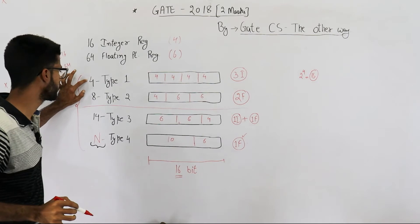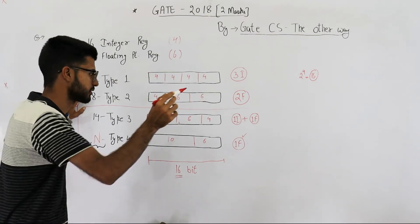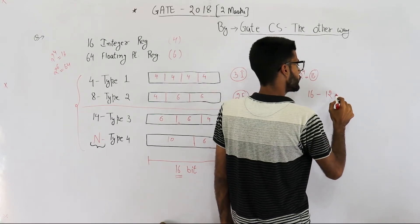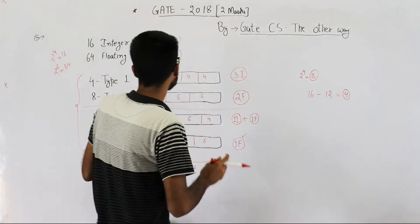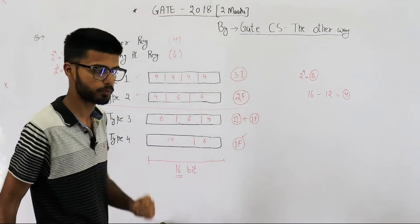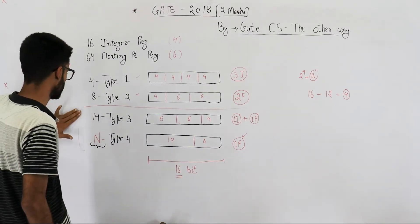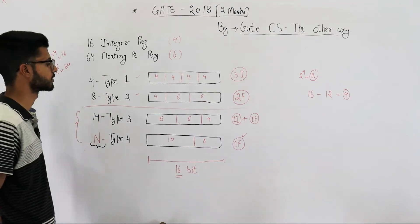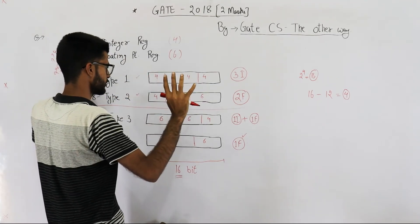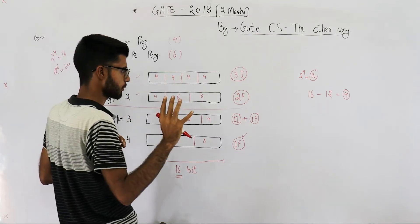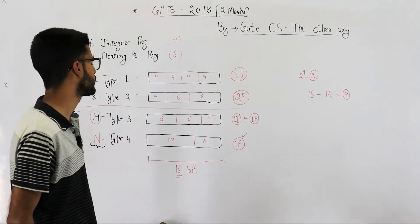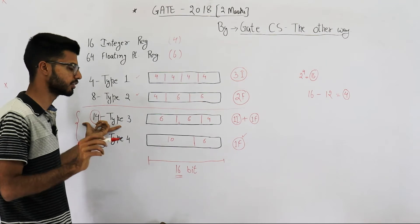Out of 16 combinations, only 4 are used for Type 1 and only 8 are used for Type 2. That means 12 are used and 4 opcodes remain free. After specifying Type 1 and Type 2 instructions using the first 4 bits, 4 opcodes are still left. Those 4 remaining combinations can be used for further instruction types. However, Type 3 needs 14 opcodes and we only have 4 free — so we cannot specify Type 3 with just those 4 combinations.